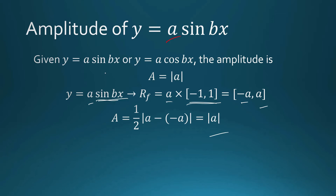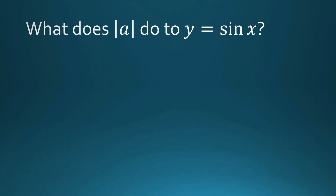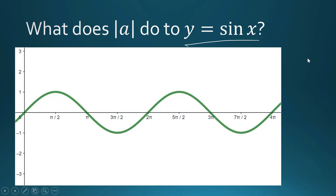When we are looking for the amplitude, we pay attention to the coefficient of our sine and cosine functions. When we are looking for the period, we pay attention to that coefficient of x — we call it b. So what does the amplitude do to your simple sine function y equals sine of x? Here, a is equal to 1, so the amplitude is the absolute value of 1, or simply 1.